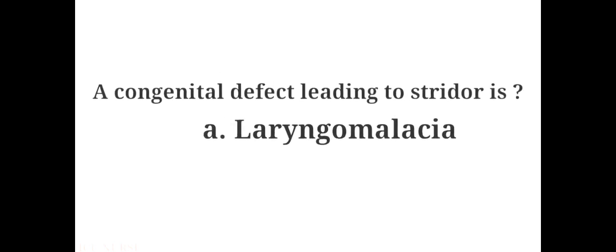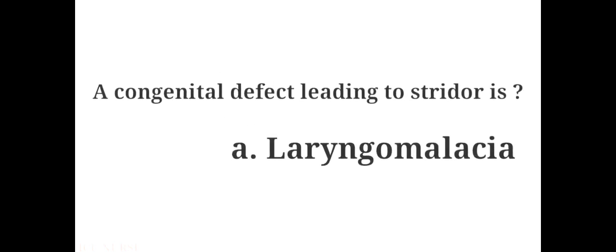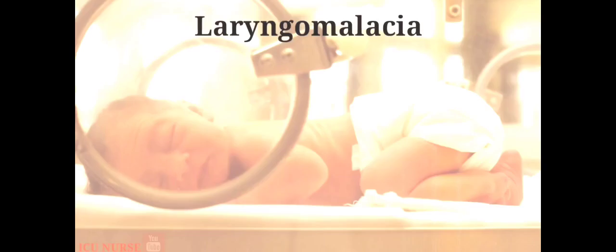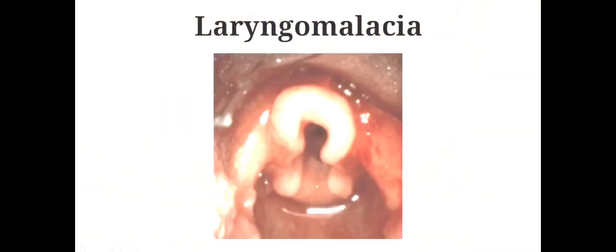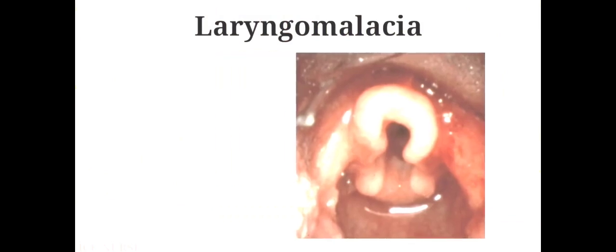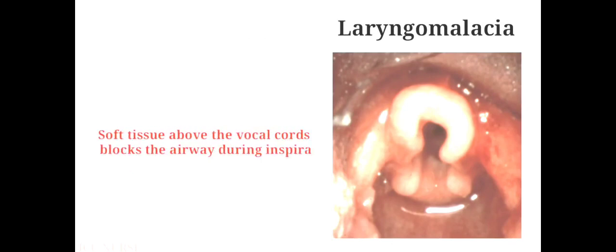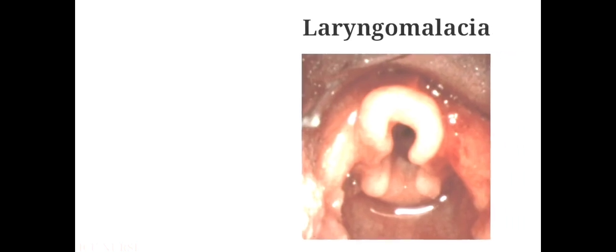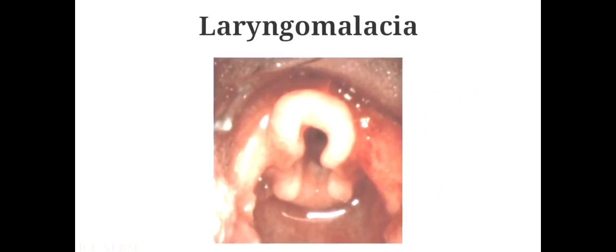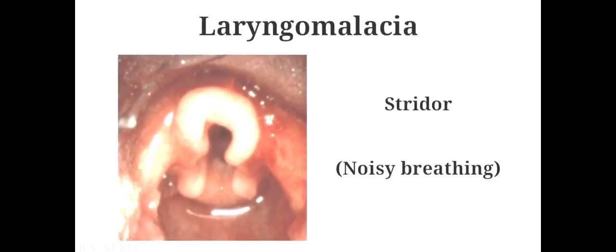Laryngomalacia is a condition most common in young babies. It is an abnormality in which the tissue just above the vocal cords is especially soft, causing it to flop into the airway when taking a breath. This can cause partial blockage of the airway leading to noisy breathing, especially when a child is on their back. The main symptom of laryngomalacia is stridor, a high-pitched sound heard when the child inhales.